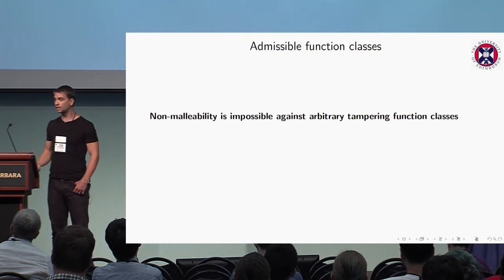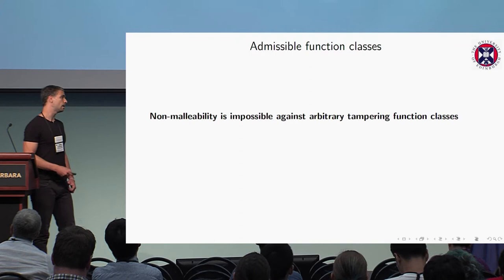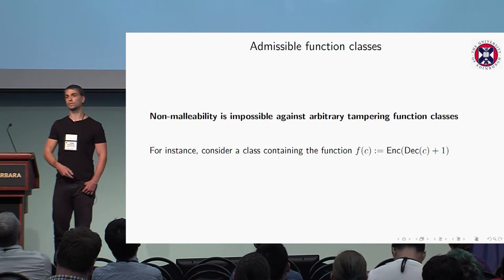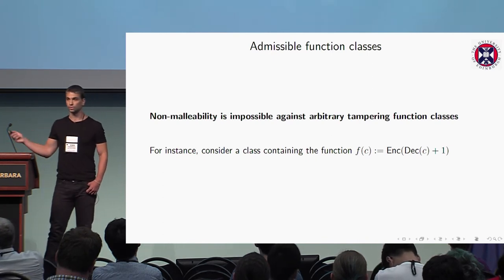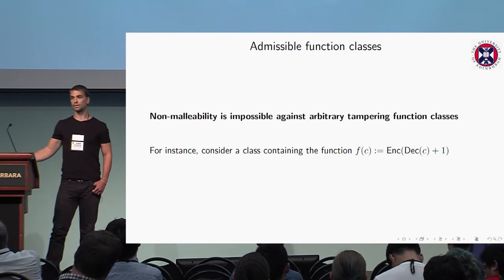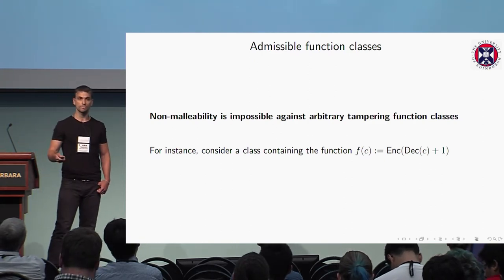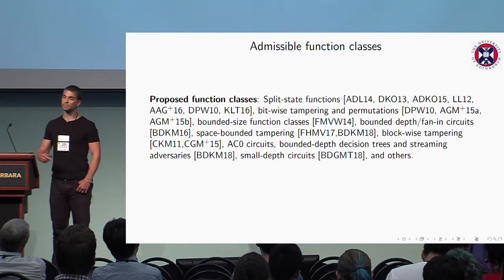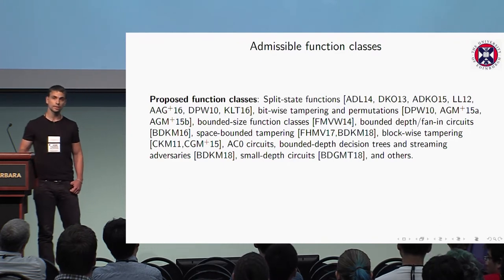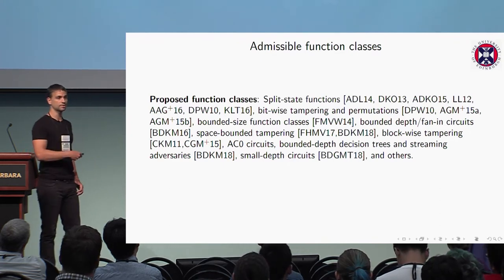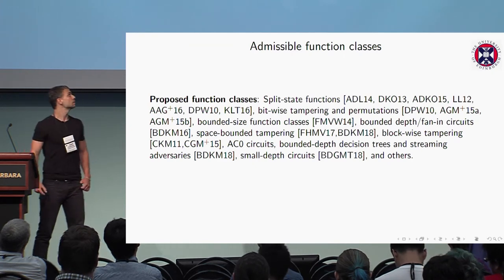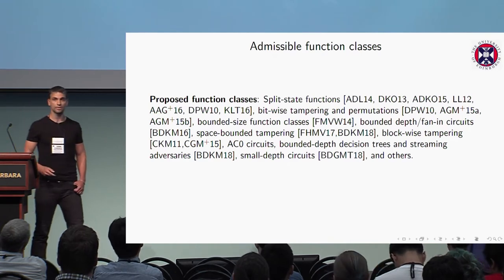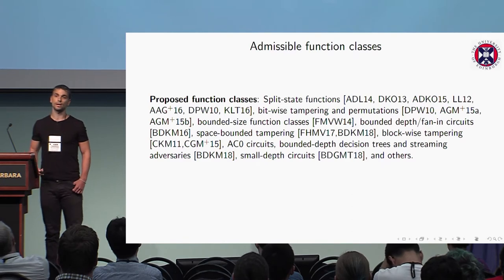Unfortunately, we cannot achieve security against any tampering function class. For instance, consider the function that first decodes the codeword, applies any function like plus one to the message, and then re-encodes. The resulting codeword is highly related, so we cannot achieve security against any class that contains such F. Over the last years, many papers have considered different models: split state functions, permutation, bitwise tampering, and many others. In this work, we consider partial functions.